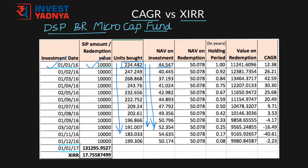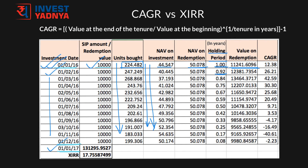When you redeemed your investment, the NAV on 1st of January 2017 was 50.078. Your units multiplied by the redemption NAV gives you the redemption value of each SIP investment. Now the holding period of each SIP is different — the one that went in on 1st of January 2016 has a holding period of 12 months, i.e. 1 complete year. The one that went in on 1st of February 2016 has a holding period of 11 months or 0.92 years, and so on and so forth.